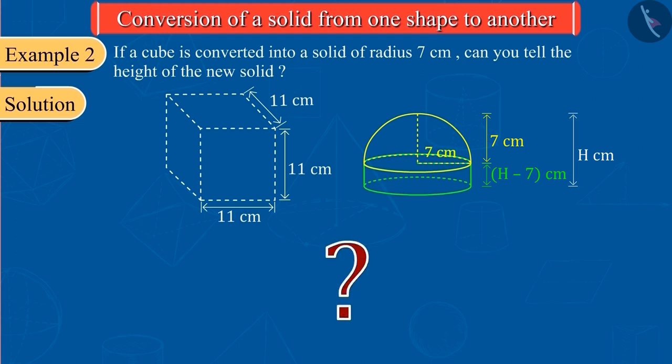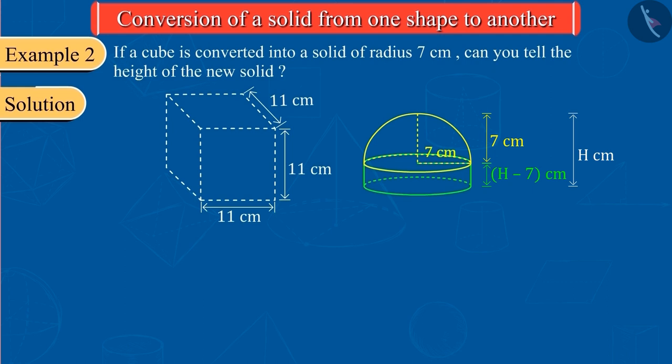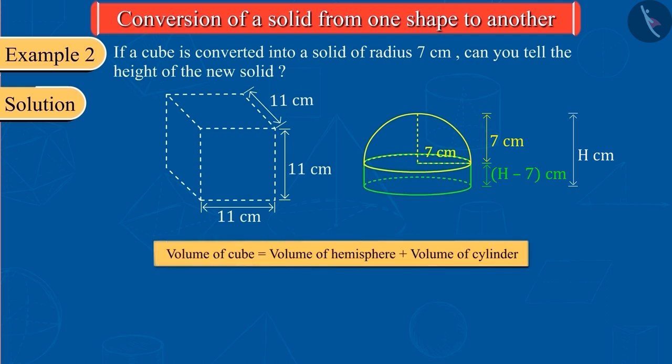Can you guess the next step now? We know that while converting one solid into another solid, the volume of both solids remains the same. So, the volume of the cube here will be equal to the sum of the volumes of the hemisphere and the cylinder.